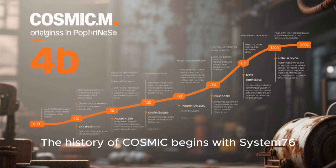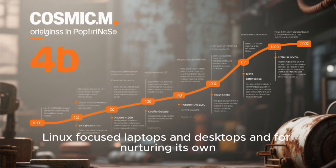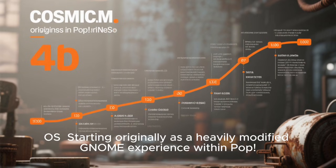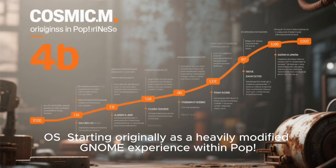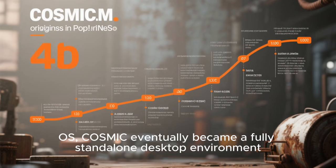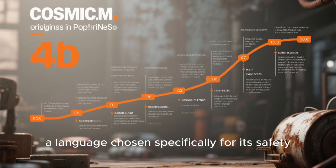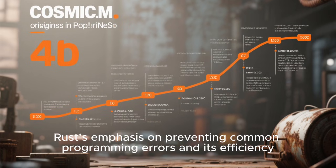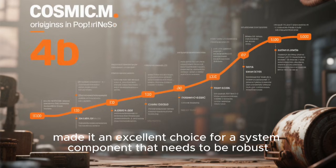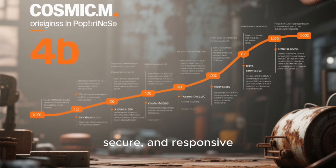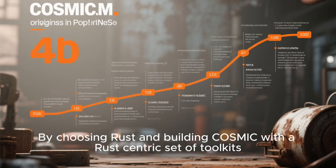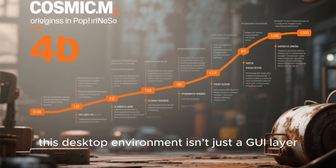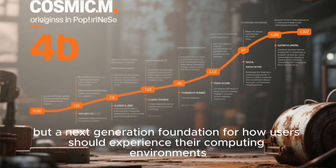The history of Cosmic begins with System76, the Colorado-based manufacturer known for building Linux-focused laptops and desktops and for nurturing its own Linux distribution, Pop! OS. Starting originally as a heavily modified GNOME experience within Pop! OS, Cosmic eventually became a fully standalone desktop environment written from scratch in Rust, a language chosen specifically for its safety, performance, and modern design attributes. Rust's emphasis on preventing common programming errors and its efficiency made it an excellent choice, and by choosing Rust, System76 made a clear statement: this desktop environment is a next-generation foundation for computing environments.